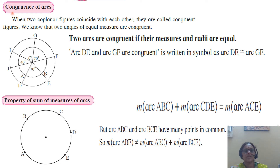Let us study congruence of arcs. When two coplanar figures coincide with each other, they are called congruent figures. Two angles of equal measures are congruent. So, two arcs are congruent if their measures and radii are equal.